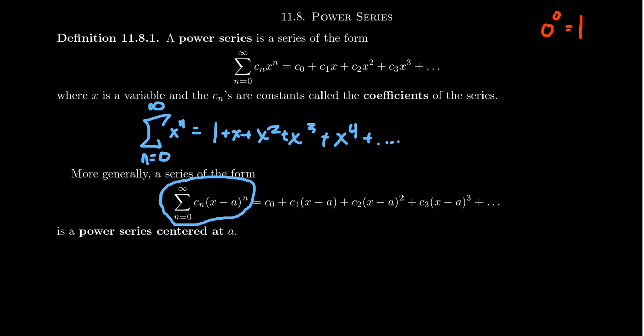If we wrote this in expanded form, we'd get c0 plus c1 times x minus a, plus c2 times x minus a squared, plus c3 times x minus a cubed, and so on. This is referred to as a power series.